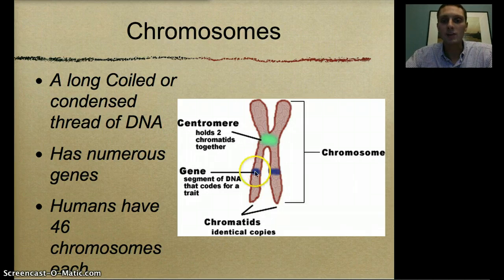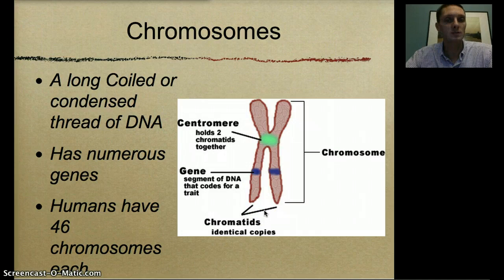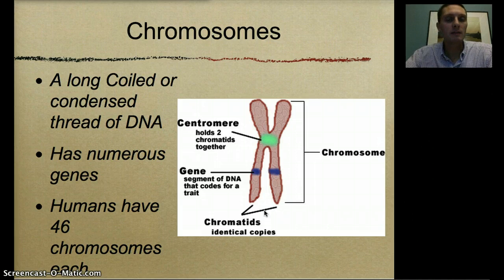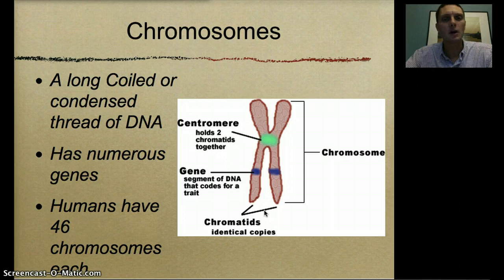A chromosome usually has numerous genes. Humans have 46 chromosomes, or 23 pairs, but this is different for every species. Fruit flies have about seven to eight chromosomes, and it varies per species. Additionally, the number of chromosomes doesn't dictate the complexity of the species — there are some fern plant species that have a couple hundred chromosomes, so it's not necessarily related to how advanced or developed the species is.